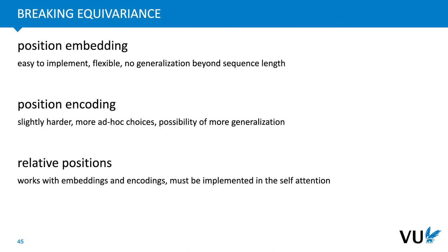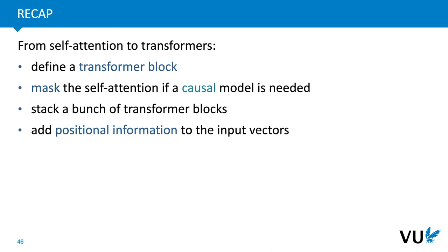To restate: position embeddings are easy to implement and flexible but offer no generalization beyond the observed sequence length during training. Position encodings are slightly harder but offer the possibility of a little more generalization. Relative positions can be used with both embeddings and encodings but must be implemented by adapting the self-attention itself, so they're not as simple as summing vectors to input vectors. This brings us from the basic self-attention operation to larger transformer models via defining a transformer block, masking the self-attention for causal models, stacking transformer blocks, and adding positional information. In the next video, we'll look at some famous transformers and how these principles have been used in practice to train very large and powerful models.